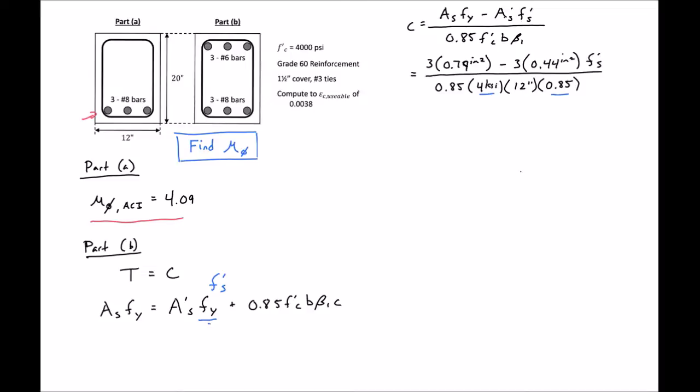So next we need to find our F prime S in terms of C. To find F prime S in terms of C, we'll go to our strain diagram. We know that our neutral axis is at a depth of C, and F prime S is at a distance C minus D prime away from the neutral axis. We can write an expression for F prime S: ES times C minus D prime over C times 0.003.